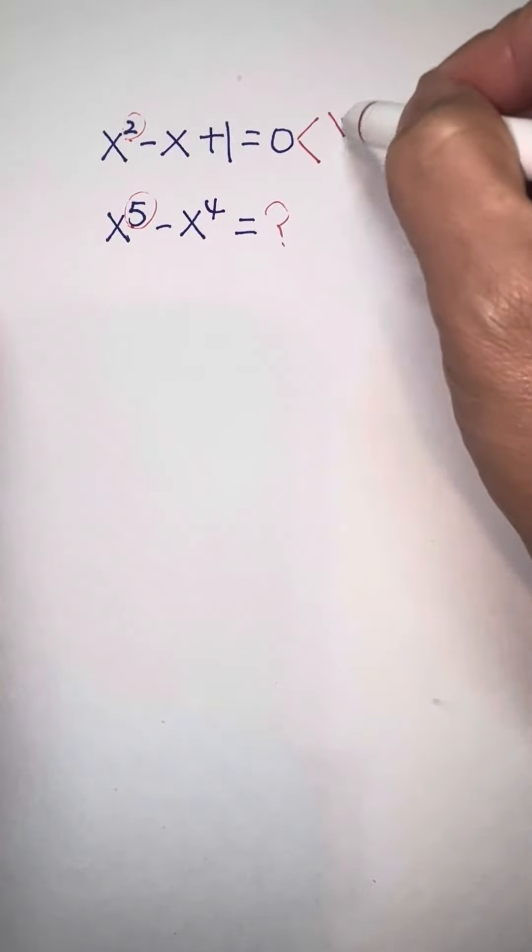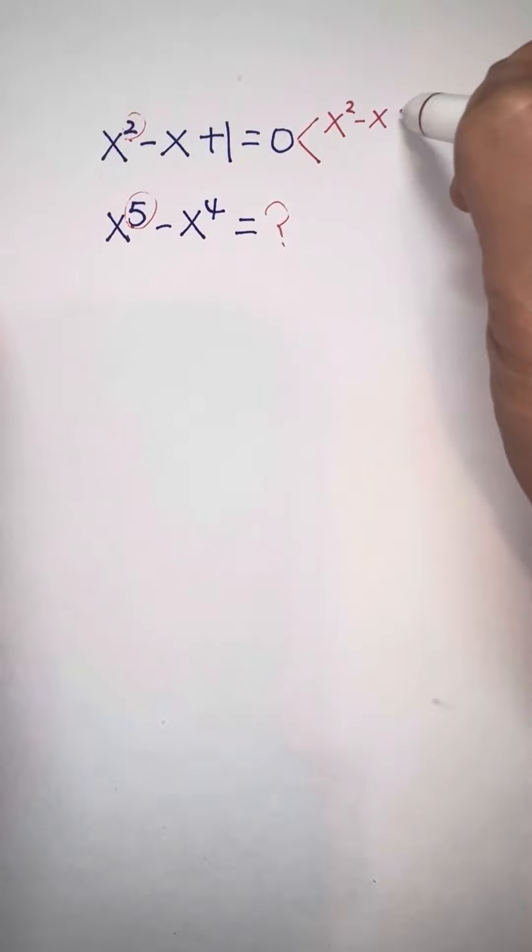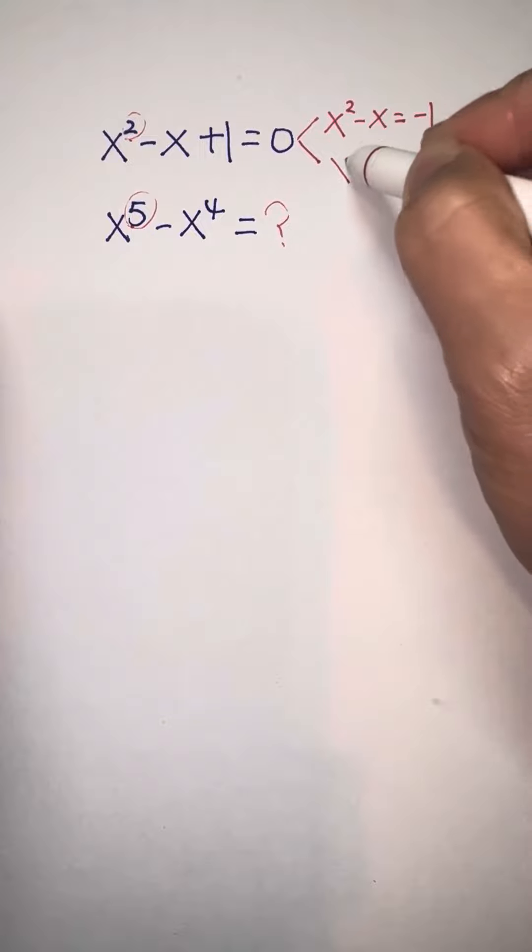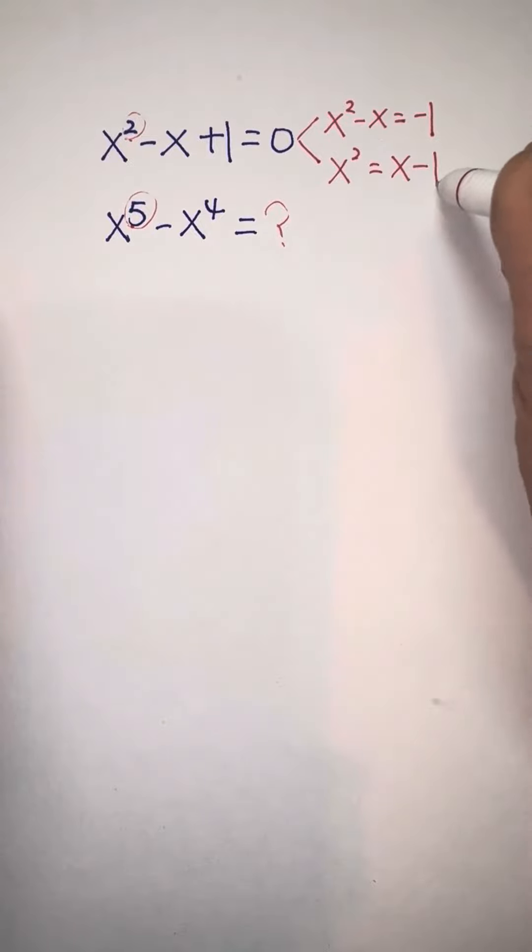We can write it as x squared minus x equals negative 1, and also we can write it as x squared equals x minus 1.